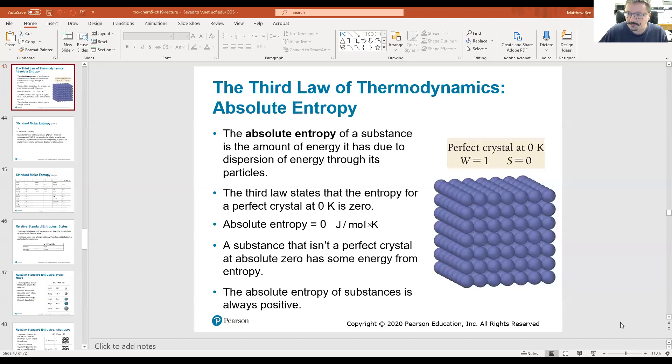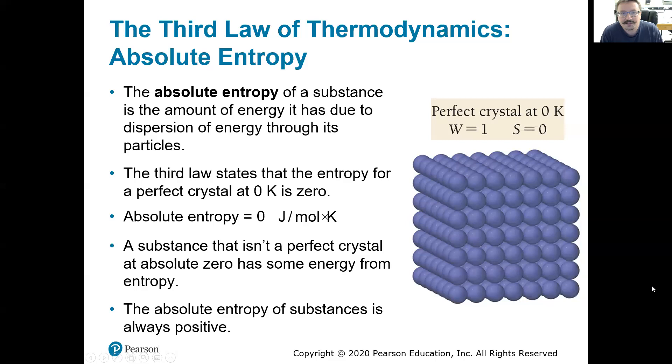We've got this third law of thermodynamics, which states the absolute entropy of a substance at zero Kelvin in a perfect crystal is zero. So what does that mean? Which essentially is telling us that nothing has zero entropy because we'll never have a perfect crystalline substance.